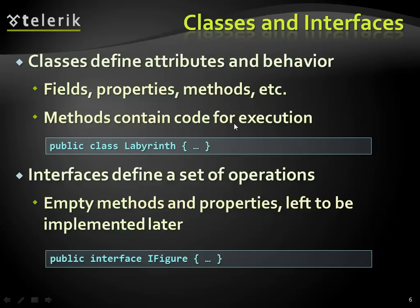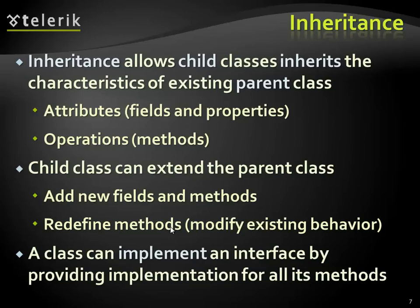We have interfaces, which are something like a class without any content — just defining what other classes must implement. With inheritance, we have the parent class, usually referred to as the base class, and we have deriving classes — those are the children that implement the inheritance from the base. We have fields and properties in the class: some are exposed (usually referred to as properties), some are hidden inside the class (those are fields), and we have operations — our methods.